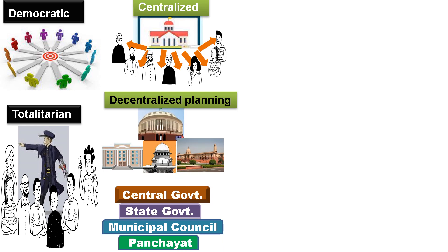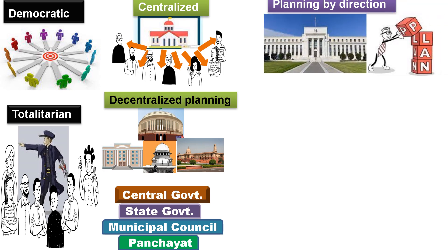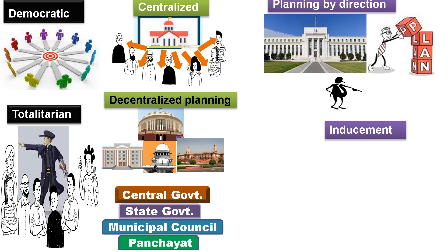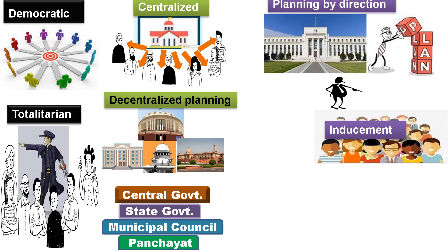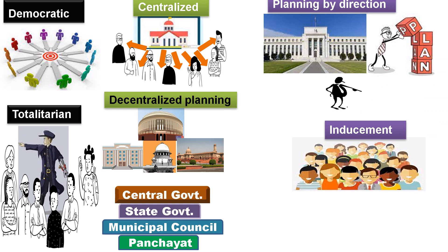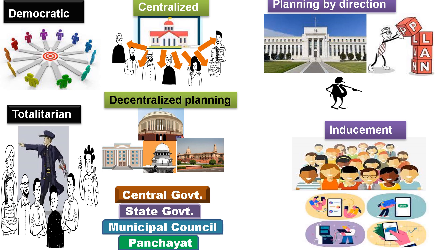Bottom to top planning. Planning by direction involves pre-determined goals and pre-determined targets. Planning by inducement uses monetary methods and physical measures to implement the plan.